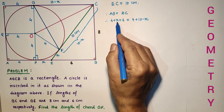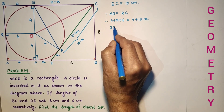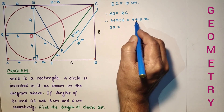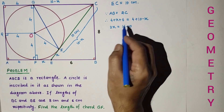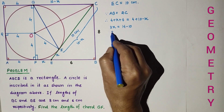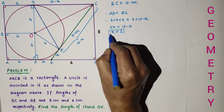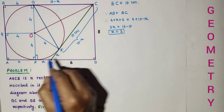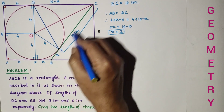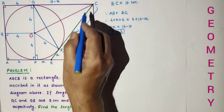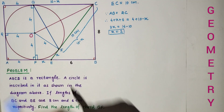Simplifying: the minus X terms combine to give 2X, so 2X equals 4, which means X equals 2. So we found X equals 2, and therefore CF equals CG equals 10 minus 2 equals 8.